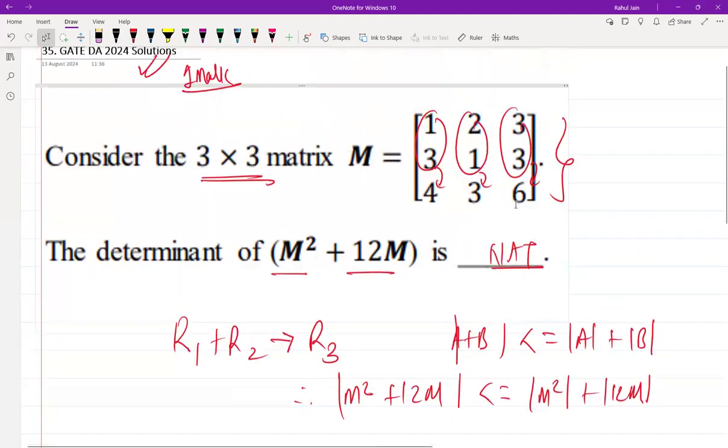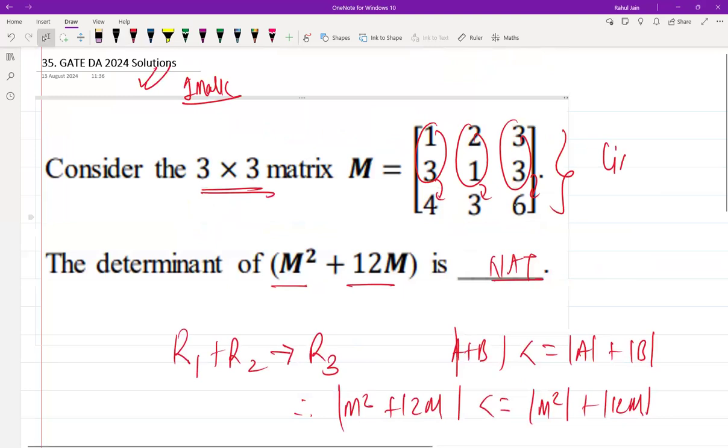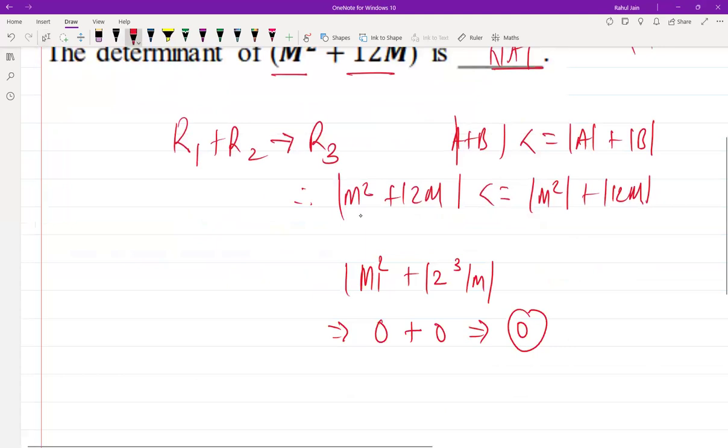Since rows are linearly dependent, the determinant of M will be 0. Hence, I can say that |M²| will also be 0, and |M| will be 0, which leads the complete result to 0.